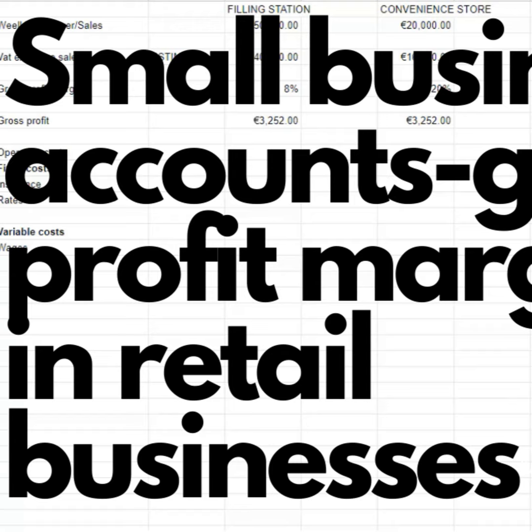People expressed an interest in a few other videos in relation to basic accounts and small business, and I'm happy enough to do such a video. This one I'm going to expand a little bit on the notion of gross profit margin and the difference between three different types of business. If you have a look at the screen you'll see I've set out a very basic rudimentary spreadsheet covering three different types of business: one is a filling station, one is a convenience store, and one is a pub.